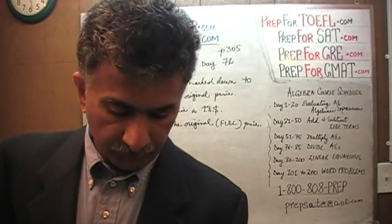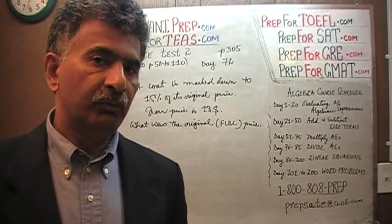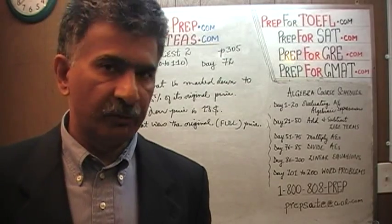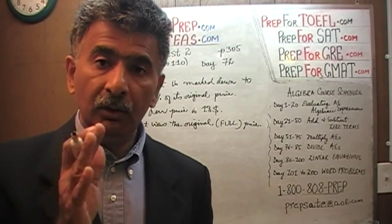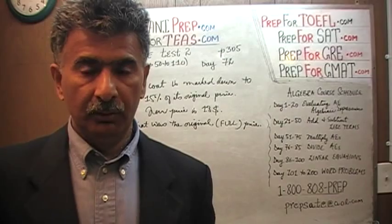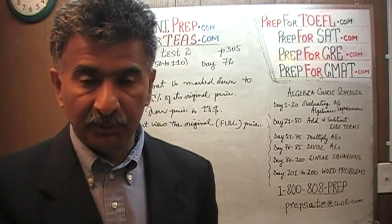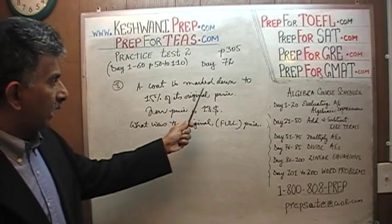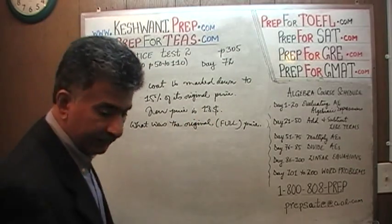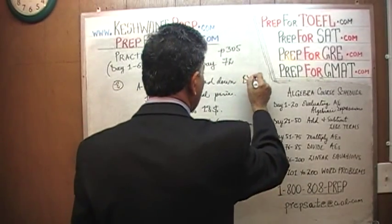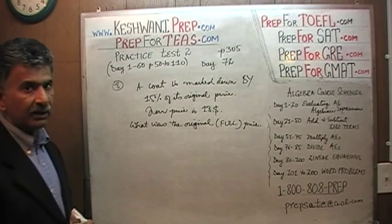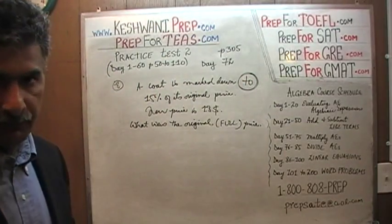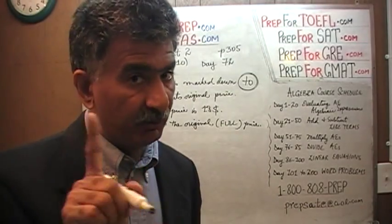The key here — the most important element — is to pay very close attention to the words. When dealing with a percentage problem, you have to pay attention to words like 'from,' 'to,' and 'by.' The most important word here is this: it says a coat is marked down — marked down — to 15 percent. It does not say marked down by 15 percent. It says it is marked down to 15 percent. Not by 15 percent.